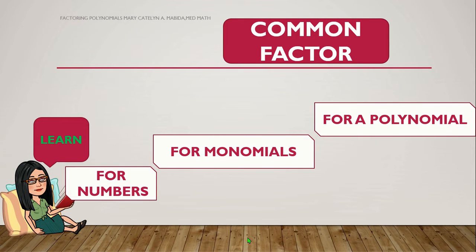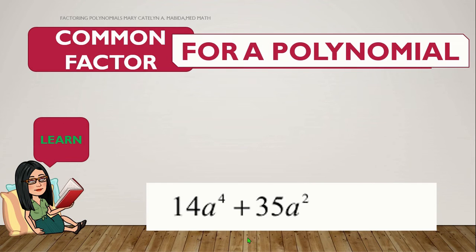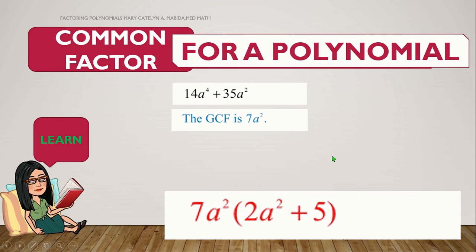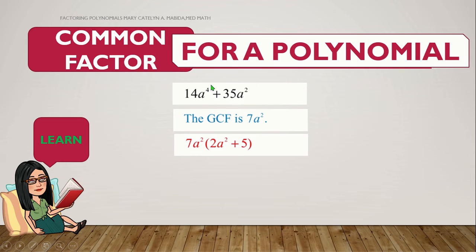Alright, now, let us apply our newfound knowledge on GCMF with polynomials. Given 14a to the 4th plus 35a squared, the GCMF is 7a squared. So what are we going to do? We are going to divide 14a to the 4th with 7a squared. The answer is 2a squared. And divide 35a squared with 7a squared. That is 5. And so, the answer for 14a to the 4th plus 35a squared is 7a squared times the quantity of 2a squared plus 5. And we are able to factor our polynomial with a common monomial factor.